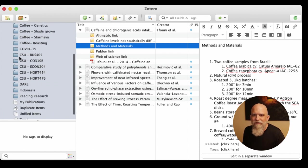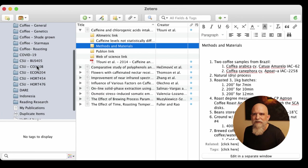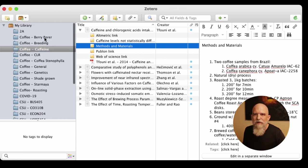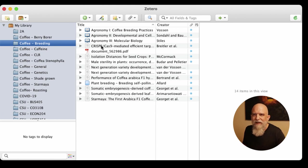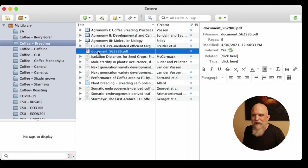I use Zotero to organize all of my research. I use it partly for school. That's what all the CSU stuff is, Colorado State University. And these are different courses that I've organized research for. And then you can see where I break it down. These are folders of documents. So for coffee breeding, I have all of these different papers that I've organized in here.